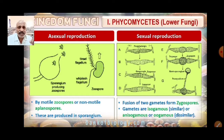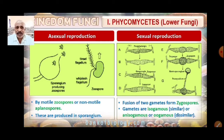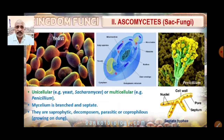Zygospores are formed by sexual reproduction through the fusion of two gametes. The gametes are isogamous — meaning both gametes are morphologically similar. If they are dissimilar, we say they are anisogamous or oogamous. So sexual reproduction occurs by fusion of gametes which may be isogamous, anisogamous, or oogamous.